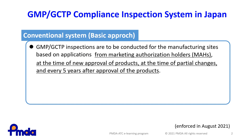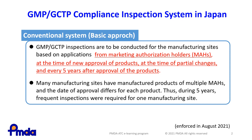In the conventional system, GMP and GCTP inspections are conducted for manufacturing sites based on applications from marketing authorization holders, MAHs, at the time of new approval of products, at the time of partial changes, and every five years after approval. Many manufacturing sites manufacture products of multiple MAHs, and the date of approval differs for each product. Thus, frequent inspections are required for one manufacturing site.